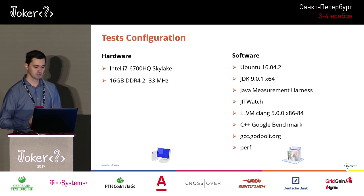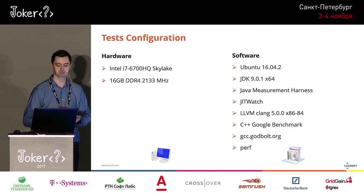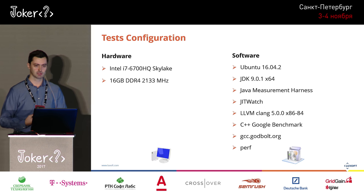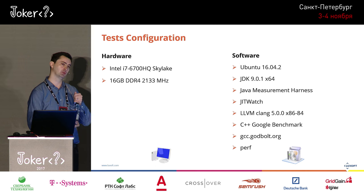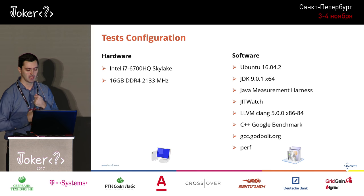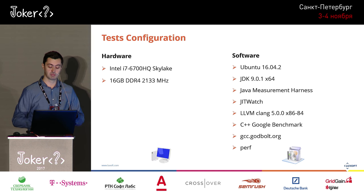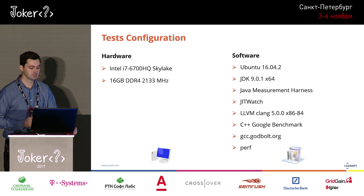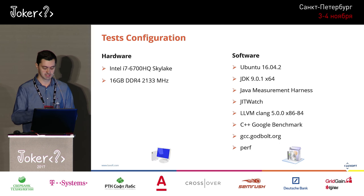In terms of test setup, I used a big bunch of software tools: the latest JDK, JMH, JIT Watch, and Perf for hardware counters. On the C++ side, I used LLVM Clang latest release, with the C++ Google Benchmark framework, and godbolt.org — which generates assembly code from C++ source — quite a useful website.